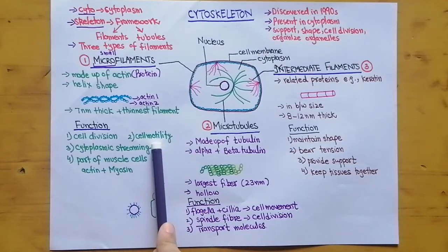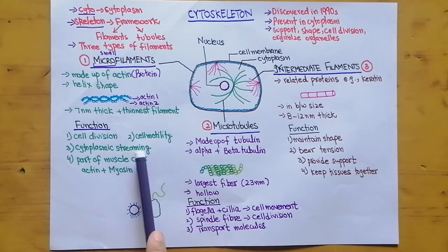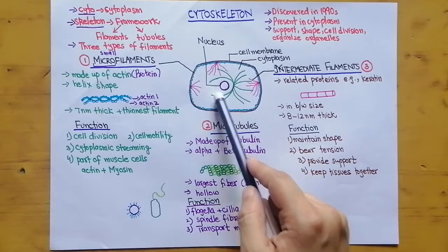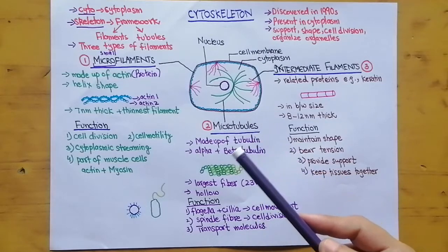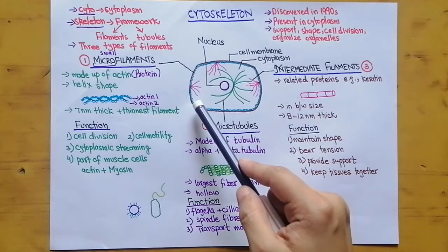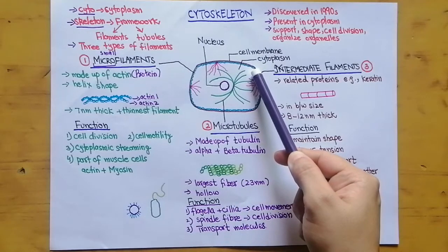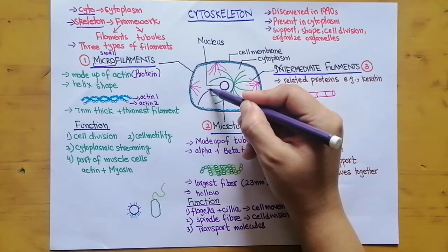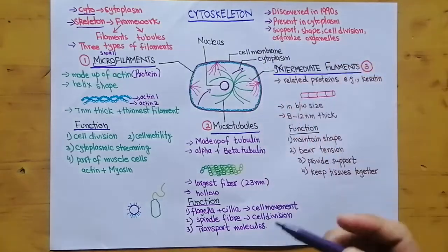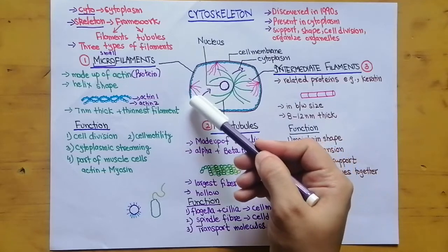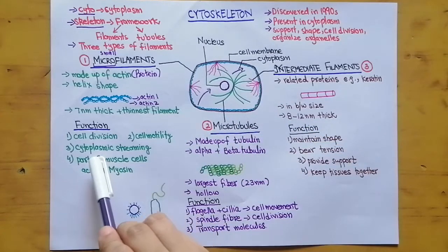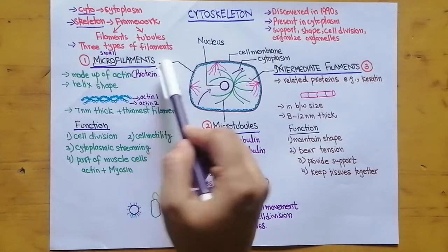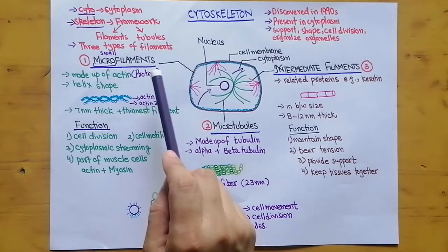The functions of microfilaments include involvement in cell division, cell motility, and cytoplasmic streaming. Cytoplasmic streaming means that nutrients and organelles inside the cytoplasm need to travel from one part to another. With the help of microfilaments, molecules and organelles can move from one part of the cell to another — this movement is called cytoplasmic streaming.